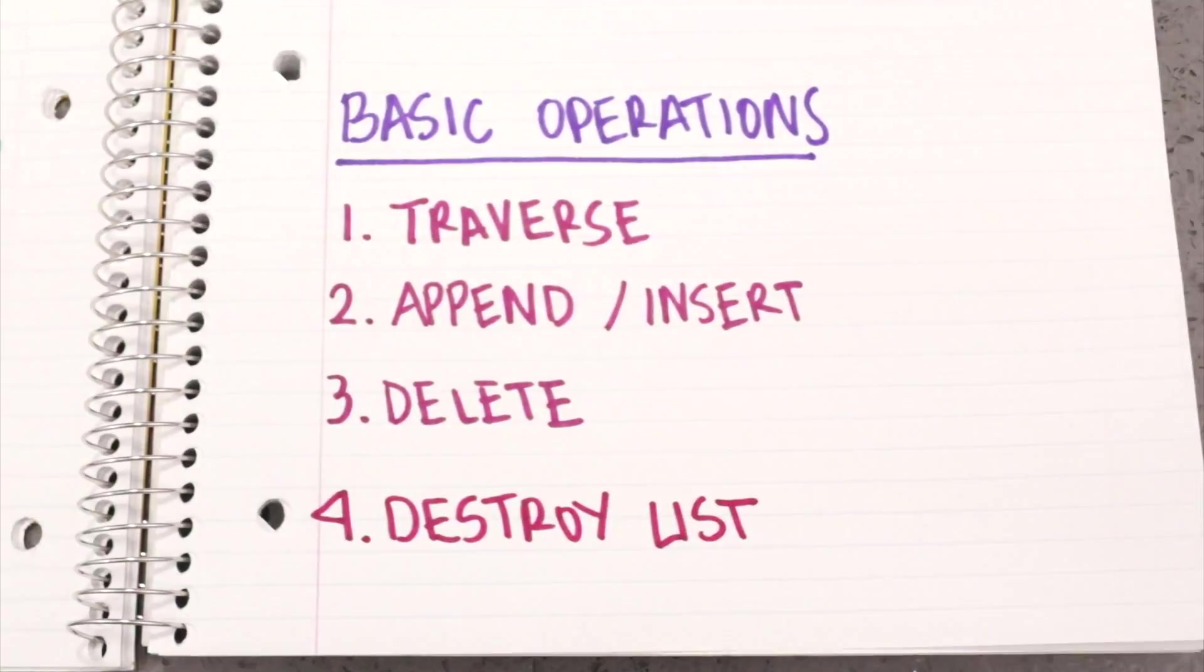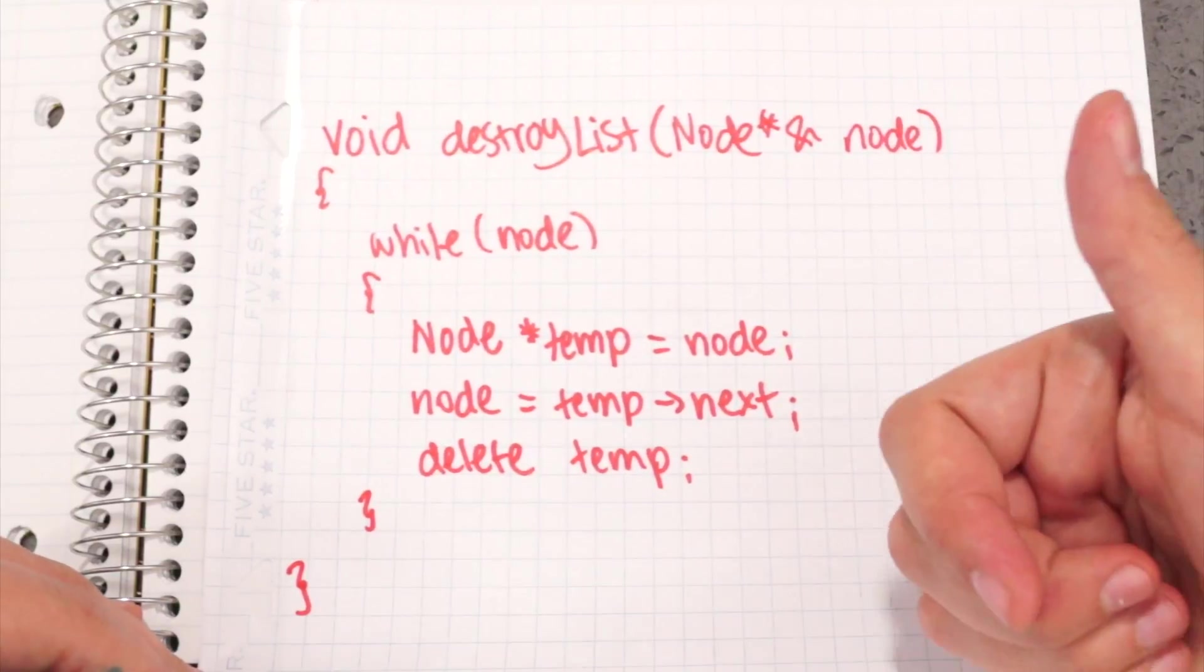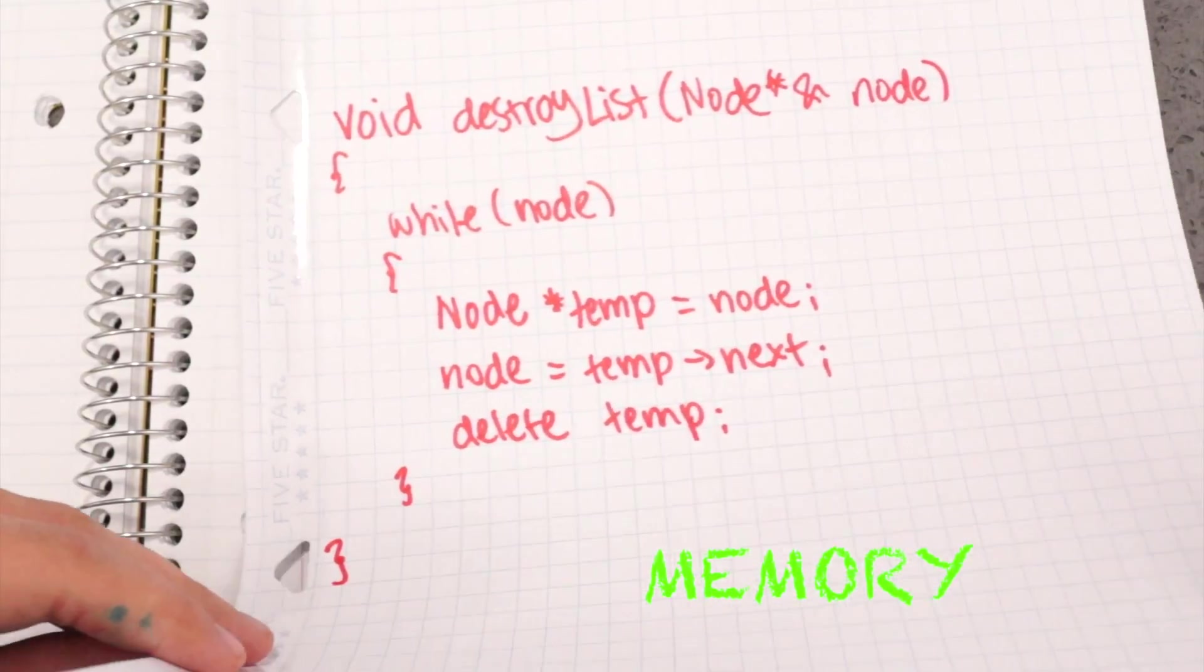Destroying the list. In this function, I iterate through the list and delete one node at a time. That way, I release all the memory used by the list.